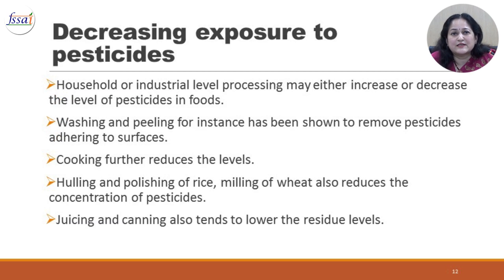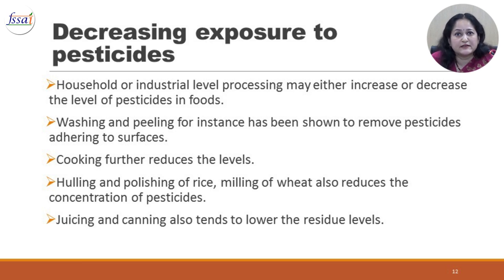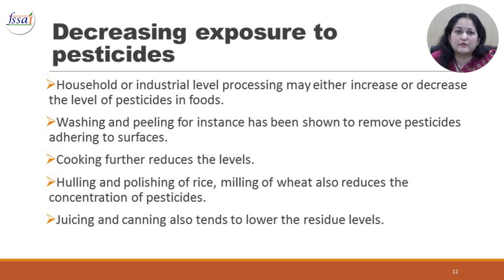To decrease exposure to pesticides, household or industrial level processing may either increase or decrease pesticide levels in foods. Washing and peeling has been shown to remove pesticides adhering to surfaces. Cooking further reduces these levels. Hulling and polishing of rice, milling of wheat, juicing, and canning also tend to lower residue levels.